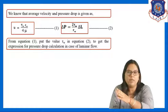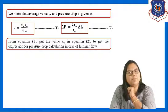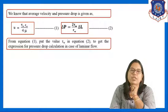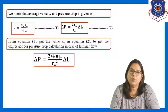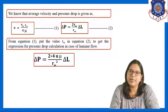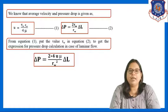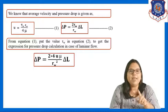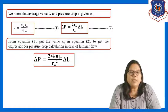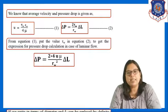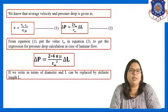From equation 1, τ_w = 4μū / r_w. Substituting into equation 2, ΔP becomes 2 × (4μū / r_w) × (1/r_w) × ΔL, giving ΔP = 8μū·ΔL / r_w². For a horizontal tube of definite length L, we replace ΔL with L. We also express in terms of diameter by substituting r_w = d/2.